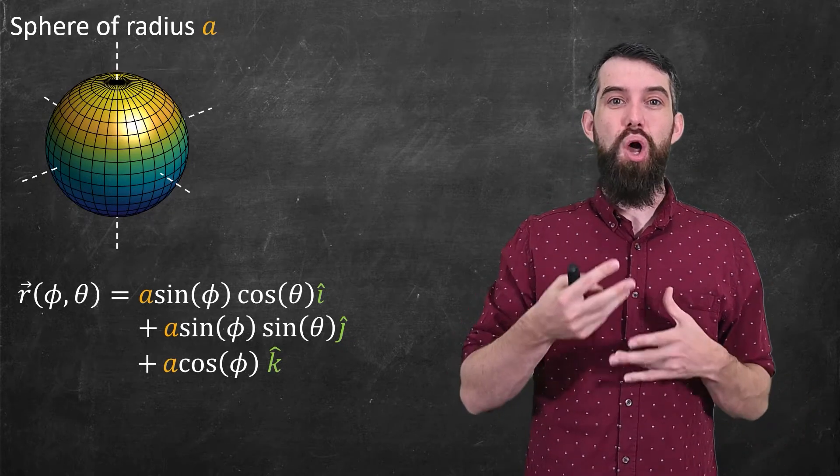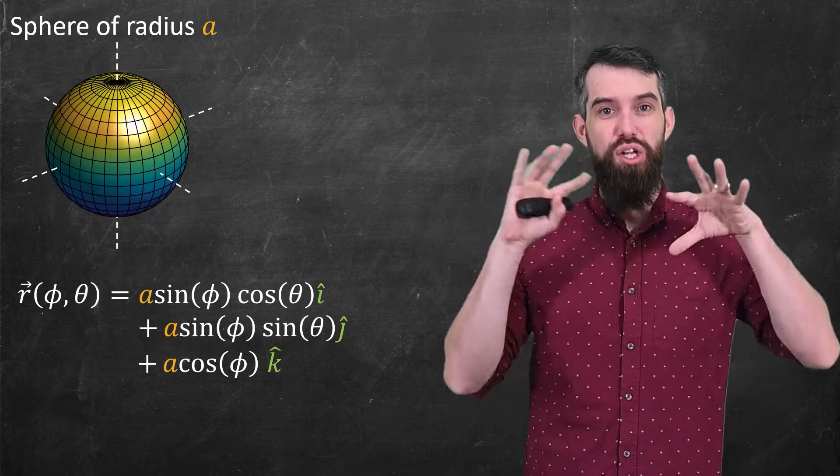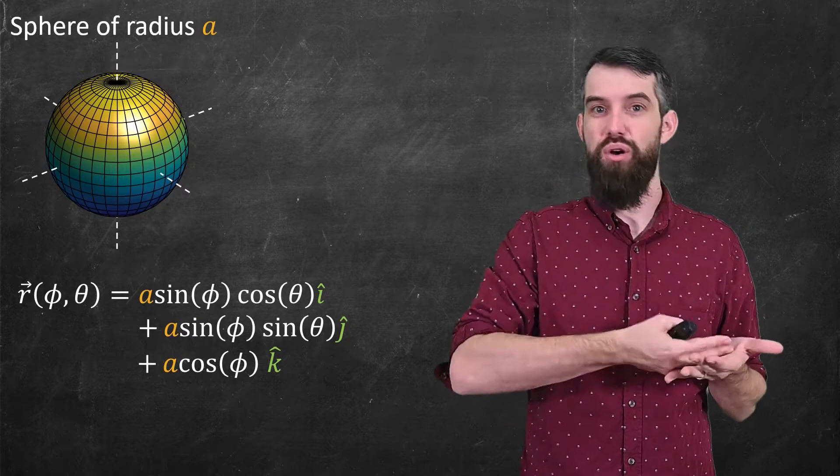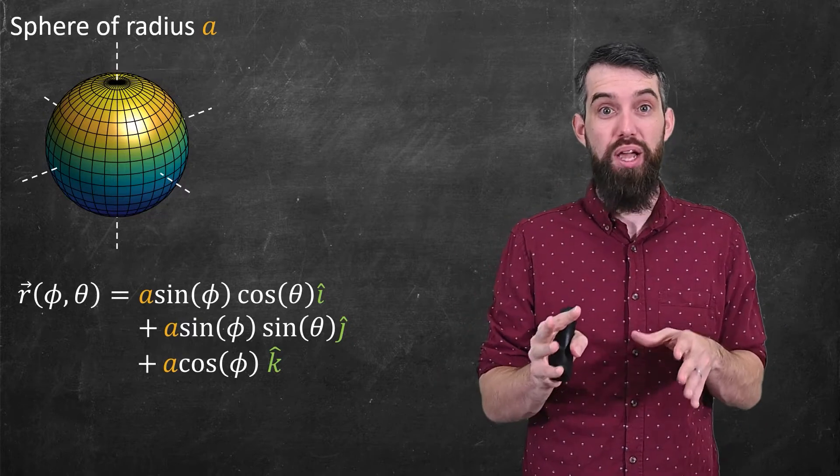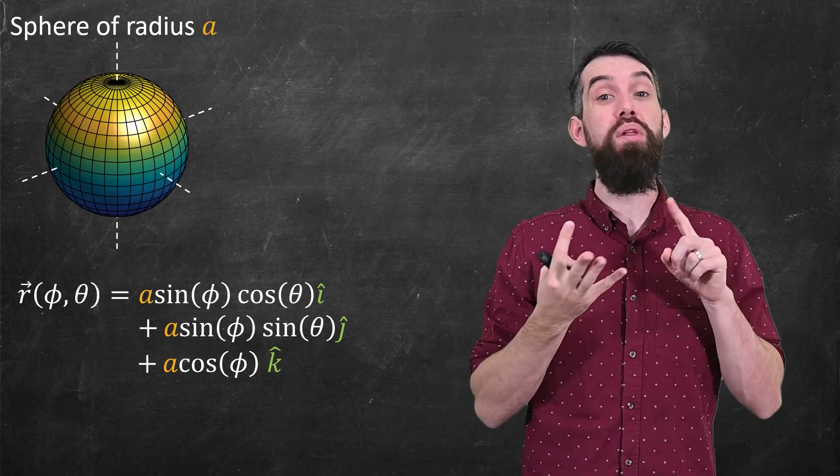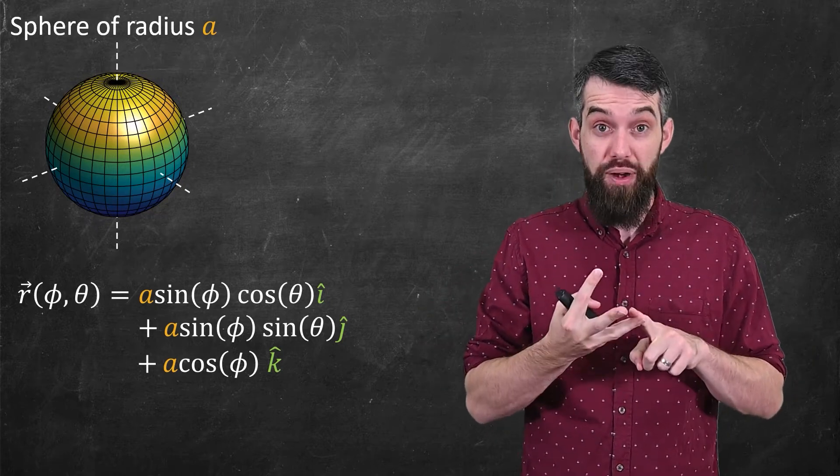If you were trying to talk about the entire region enclosed by the sphere, then you might allow a to range between zero and some number as well. But that's not what we're doing, we're just talking about surface area, we're trying to parameterize just the surface, and you only need a φ and a θ to do that as the a is given.